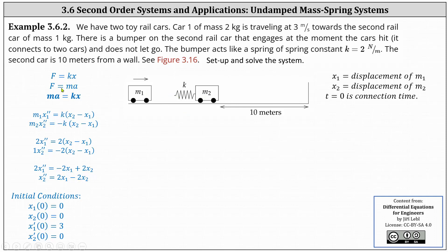Moving to mass two, we have m2 times x2 double prime. As mass two moves to the right, the spring is stretched, pulling the mass back to the left, so the force is negative. This gives us the force of the spring equals negative k times the spring compression, which is x2 minus x1. In this case the compression is actually a stretch. Substituting the known values m1 equals 2, k equals 2, and m2 equals 1, and simplifying, the result is 2x1 double prime equals negative 2x1 plus 2x2, and x2 double prime equals 2x1 minus 2x2.